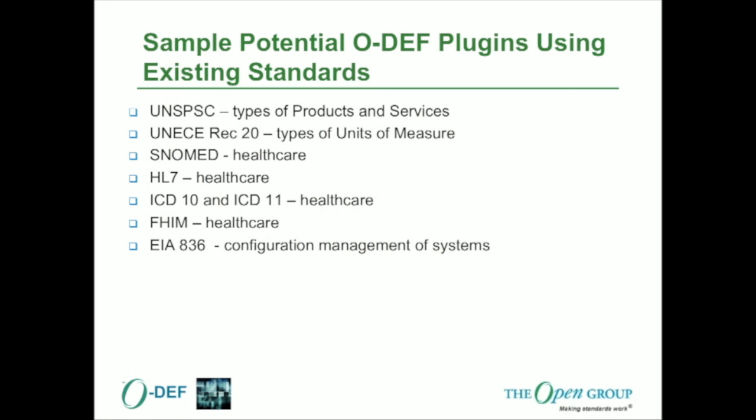Within the ODIF, there's no limit to how many plug-ins could be added. The United Nations has standard product and services codes, and also types of units and measures known as REC-20. In the healthcare area, you've got SNOMED, HL-7, ICD-10, ICD-11, and within the Open Group they helped create a federal health information model. There's also EIA-836, which is configuration management of systems — all of these could be plug-ins to the ODIF.